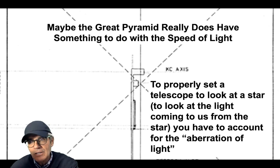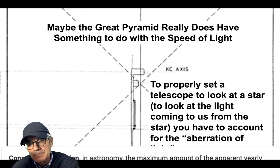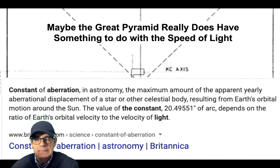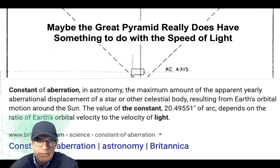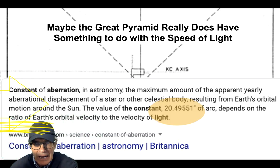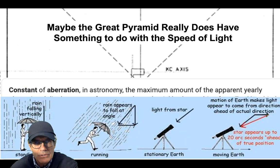To properly set a telescope to look at a star — actually to look at the light coming to us from that star — you have to account for the aberration of light. You can get a technical definition by looking at Britannica. The value of this constant of aberration of light is 20.5. Other people have given slightly different numbers for that, but that's close to what it is.